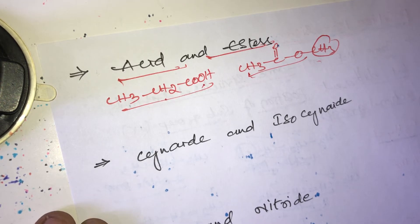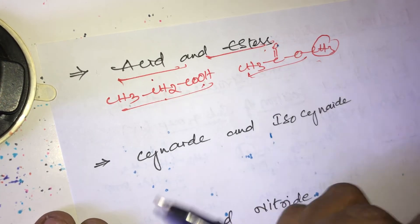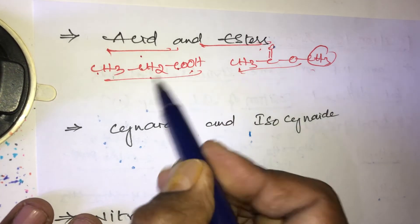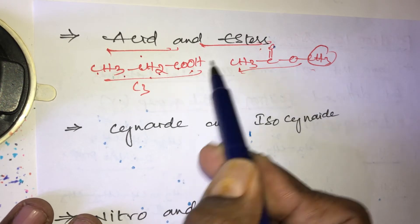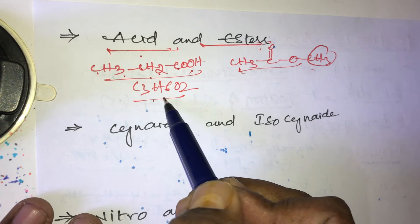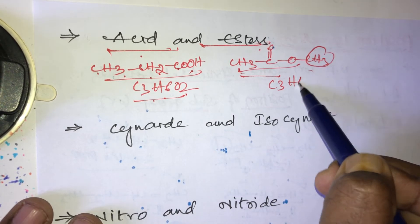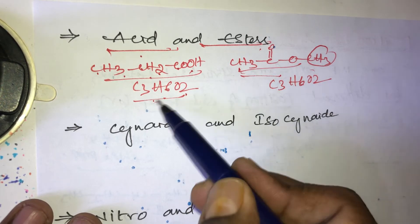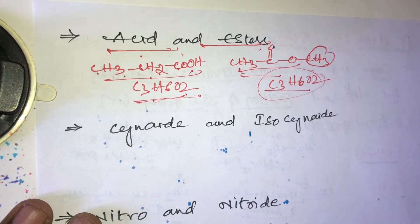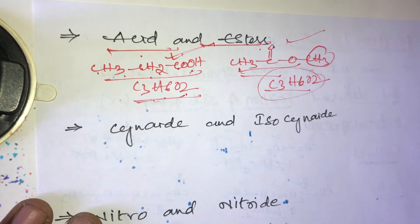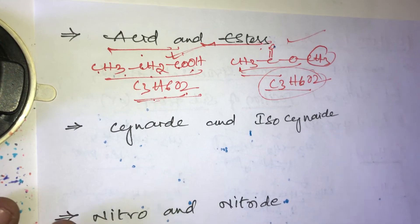The molecular formula for propanoic acid and methyl ethanoate is the same: C3H6O2 — three carbons, six hydrogens, two oxygens. The functional group in propanoic acid is the carboxylic acid group, and in methyl ethanoate it is the ester group. Same molecular formula, different functional groups.